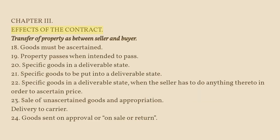Chapter III — Effects of the Contract. Transfer of Property as between Seller and Buyer. Section 18: Goods Must be Ascertained. Section 19: Property Passes when Intended to Pass. Section 20: Specific Goods in a Deliverable State. Section 21: Specific Goods to be Put into a Deliverable State. Section 22: Specific Goods in a Deliverable State when the Seller has to do anything thereto in order to ascertain price. Section 23: Sale of Unascertained Goods and Appropriation.